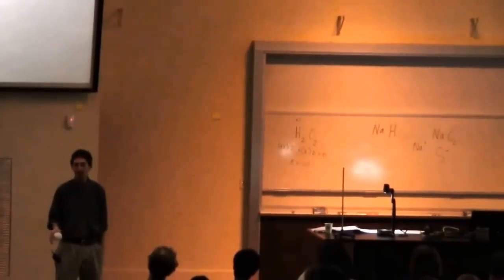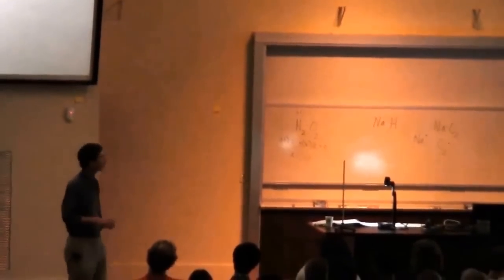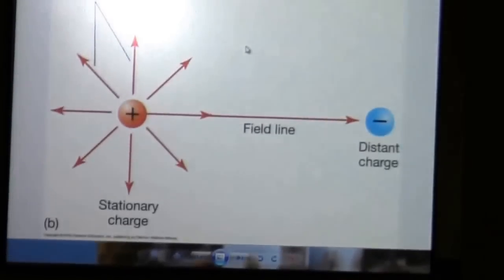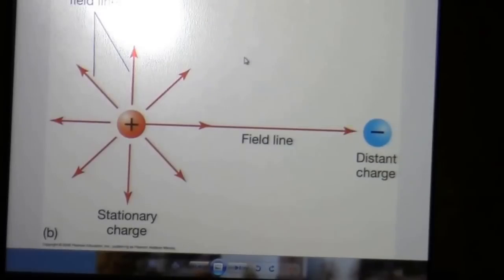The equation looks just the same, except instead of two masses, you have two charges, and you have a different constant proportionality. But it's one over distance squared, the dissipation of force with distance. So here we have a positive charge, and we have a negative charge over there. It feels the force, and it's going to want to move towards the positive charge.